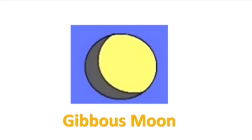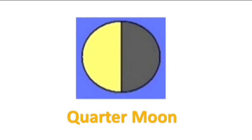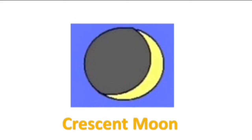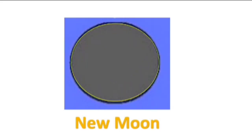This is a gibbous moon which has a little bit less light. This is a quarter moon which has again a little bit less light, and this is a crescent moon. But a new moon has almost no light.